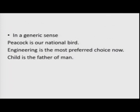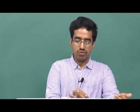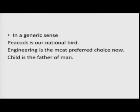The second rule is when you are using a noun in a generic sense, we do not use any article. Look at the examples: 'Peacock is our national bird,' 'Engineering is the most preferred choice now,' 'Child is the father of man.' In the first example, peacock is used in a generic sense — not referring to one single or specific peacock, but to the entire class of peacocks. Similarly, engineering and child here are also used generically, so there is no article.